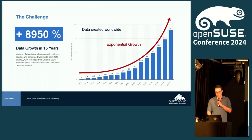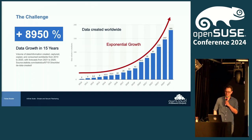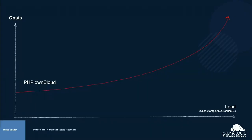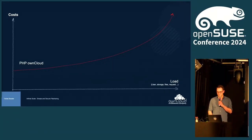On the backend side, the challenge is that data created worldwide is constantly growing in an exponential way. With the old PHP OnCloud we hit the limits — for example, of the database. Then you needed a second database or a Galera cluster, then people to maintain it, they're not in the company, you hire them, it costs money. At some point the costs really increase. The x-axis represents load — amount of users, storage, files, requests — and costs is total cost of ownership, not just server costs.